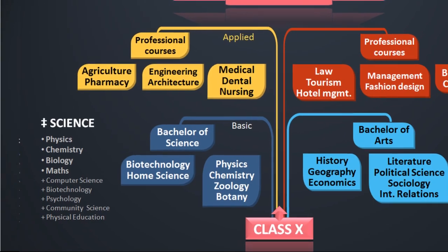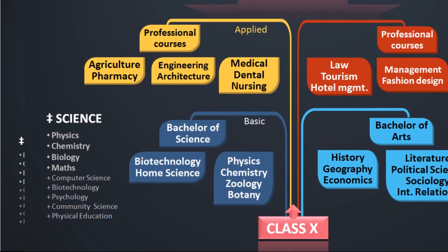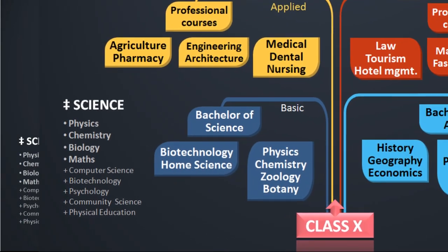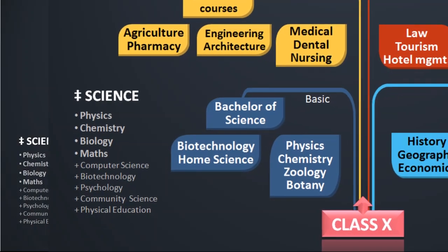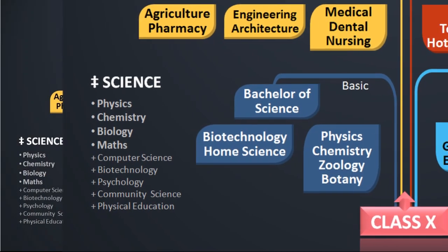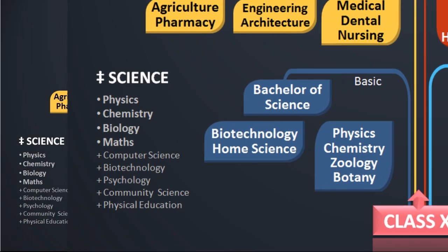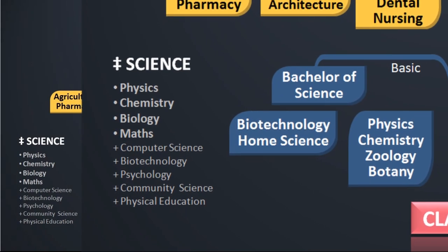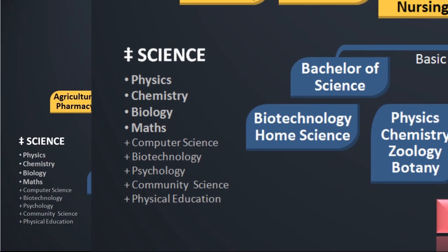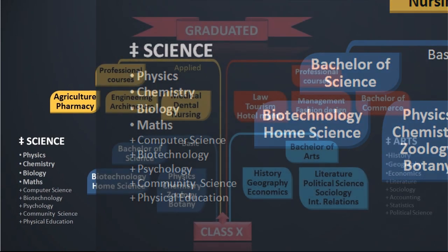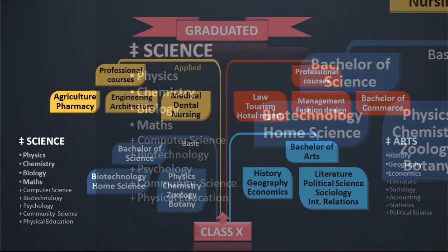Core subjects: physics, chemistry, biology, maths — these are the core subjects of our global topic. The subject of English includes computer science, robot technology, aeropsychology, community science, and human science. This is the physical education of our Class 12 paper.